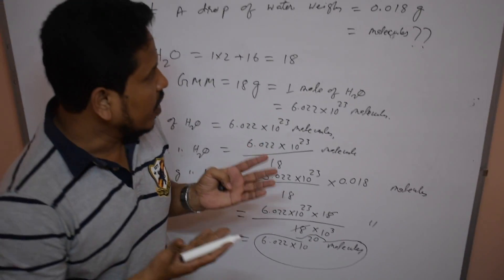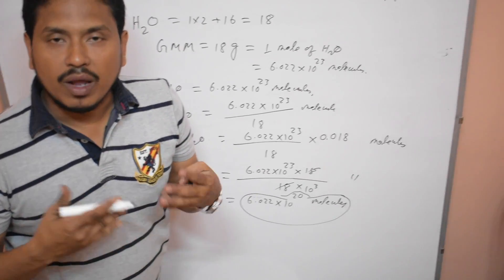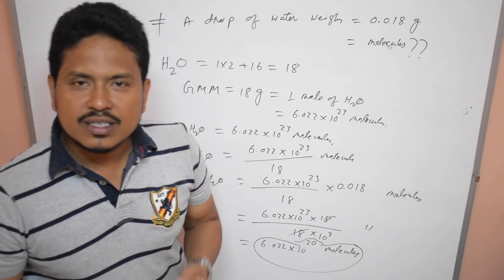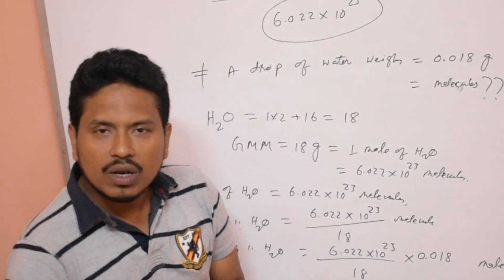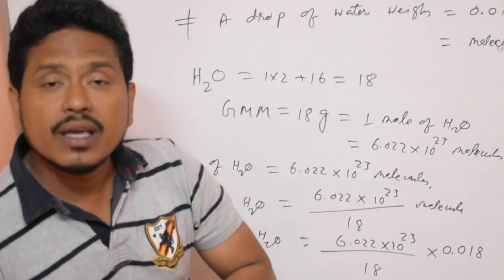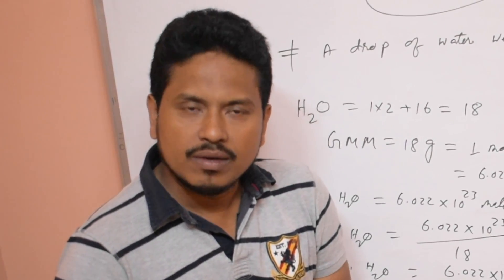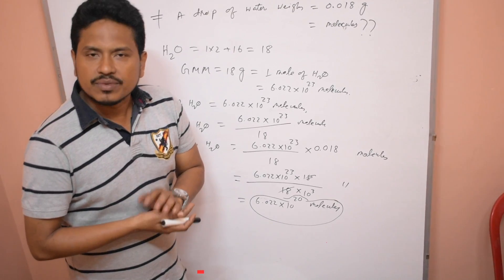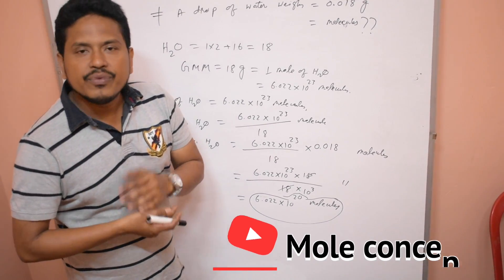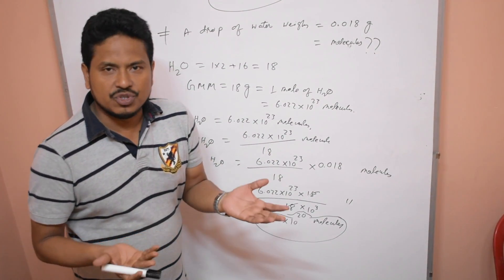So we have calculated that one drop of water contains 6.022 × 10²⁰ molecules, applying the mole concept. I hope you understand — in this way, with the help of the mole concept, we can calculate the number of atoms or number of molecules in a particular quantity. Thank you. Today we have discussed the importance of the mole concept. For the next class, chemical calculations — mole concept is very important. If you feel that this class benefited you, please subscribe the channel, like and share. Every Wednesday I will teach a new topic and be your companion on the chemistry journey. Thank you.